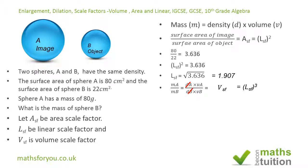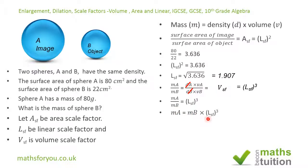The volume scale factor equals the linear scale factor cubed. So effectively, mass of A divided by mass of B equals the linear scale factor cubed. Cross-multiplying gives us that the mass of the image equals the mass of the object times the linear scale factor cubed. Dividing both sides by L_SF cubed, the mass of the object equals the mass of the image divided by the linear scale factor cubed.